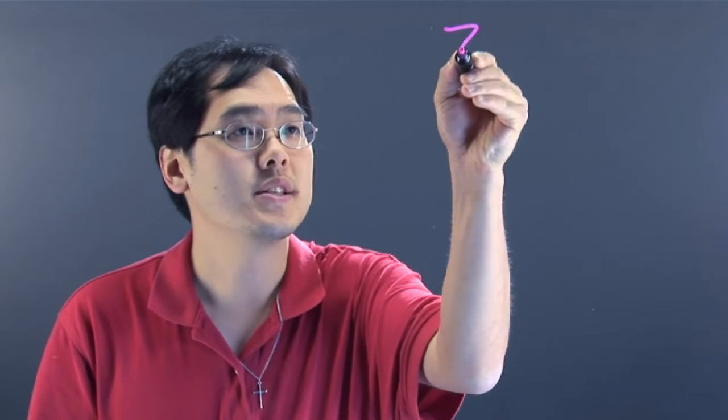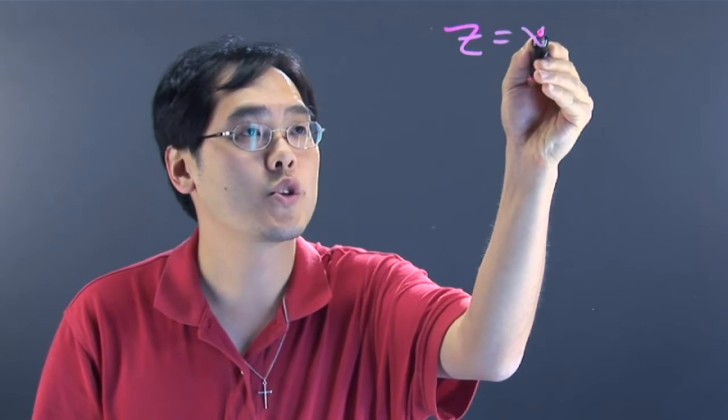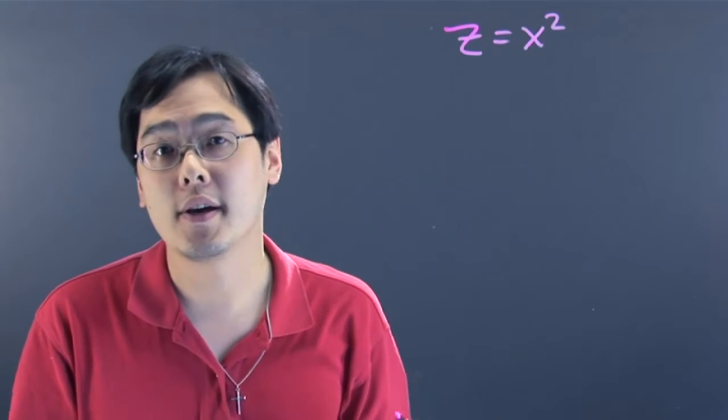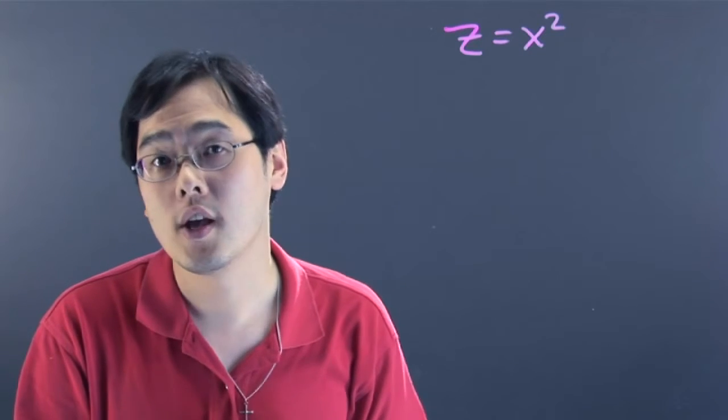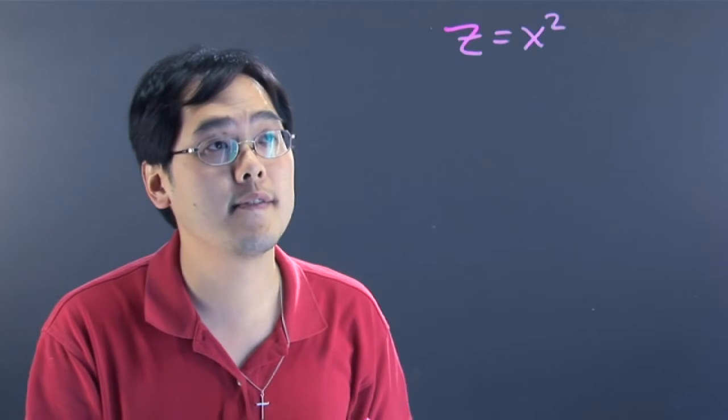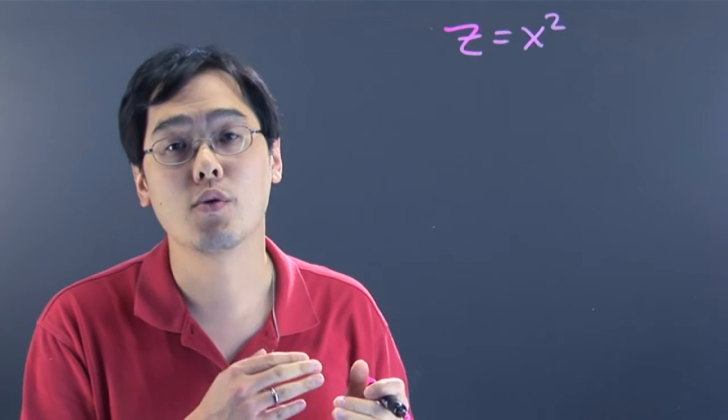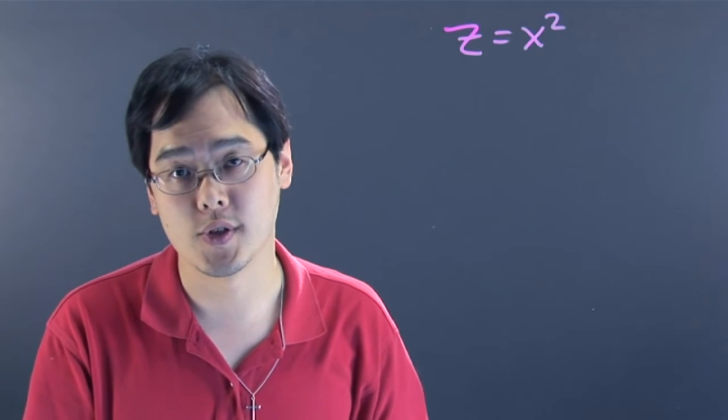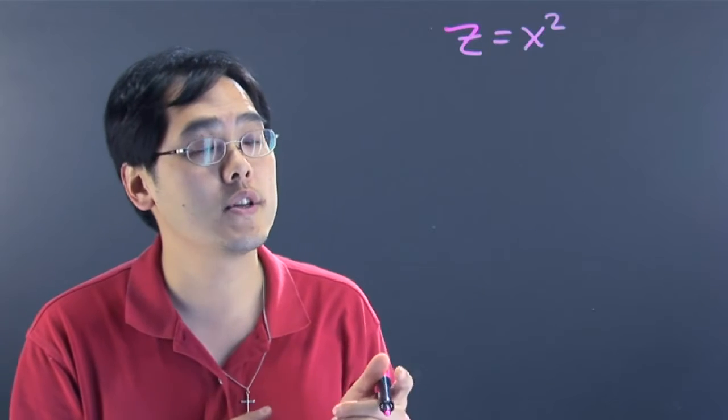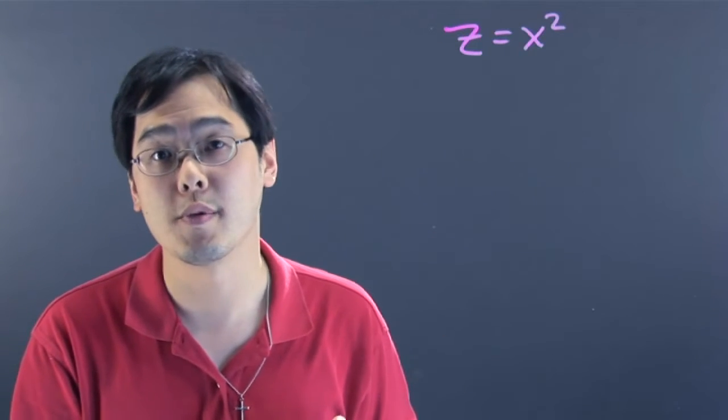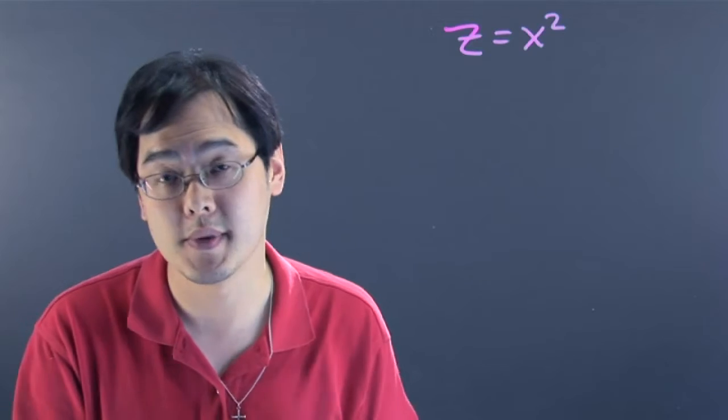So we're going to use z equals x squared as an illustration. Now as you might imagine there is no y here. What that basically means is whenever you have a missing variable in this case you will always have a cylinder as a result of your graph. So what that means here is that the rulings of the cylinder will be parallel to the y-axis, the one that's missing.